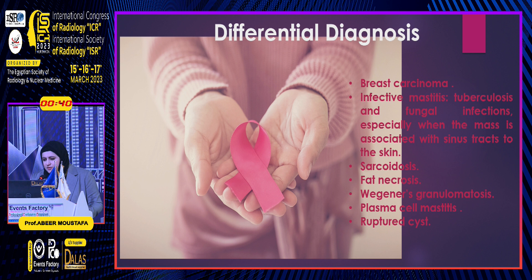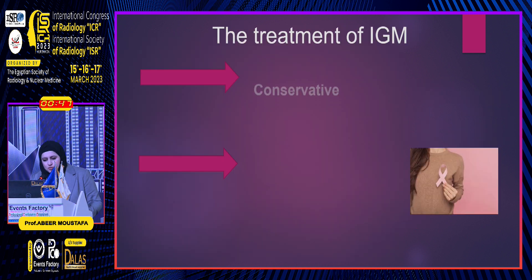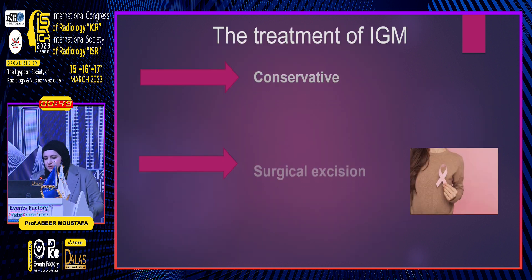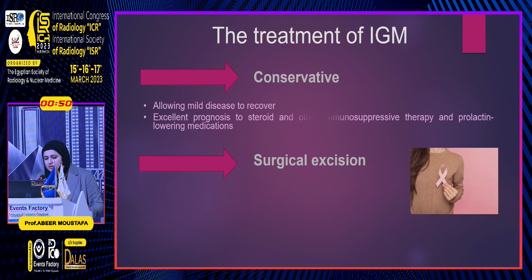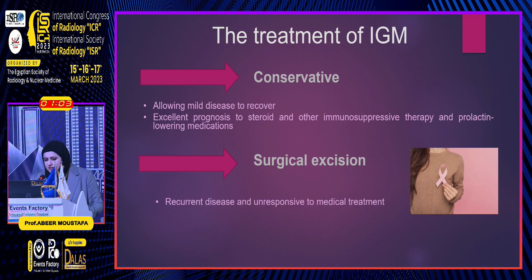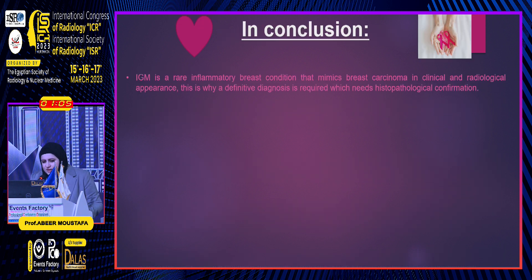The differential diagnosis usually includes breast cancer, infective mastitis, sarcoidosis, fat necrosis, and Wegener's granulomatosis. Treatment is usually conservative or surgical excision. Conservative management gives time to recover, and sometimes immunosuppressants and prolactin-lowering drugs are given. Surgical excision is reserved for refractory cases.